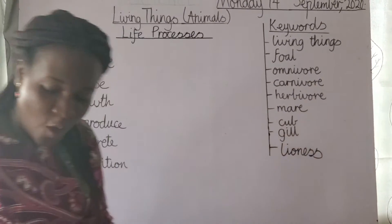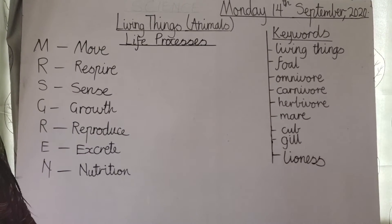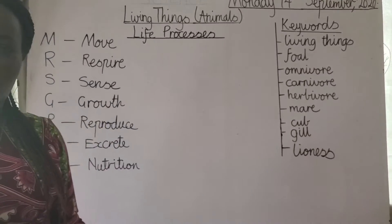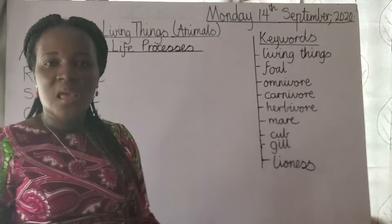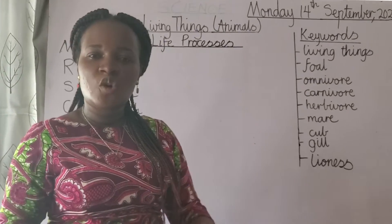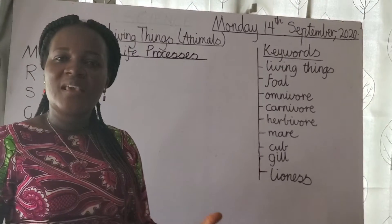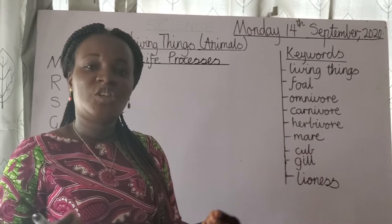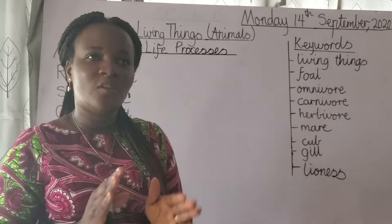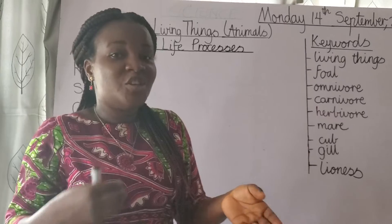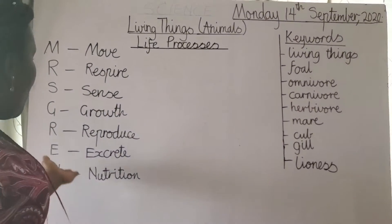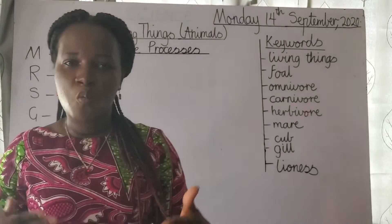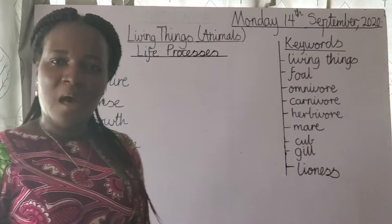Animals also give birth. We also have animals that lay eggs, such as the hen. When the hen lays its egg, it sits on it for a while, and then the eggs hatch. When we say hatch, it means the egg breaks and the chicks come out.